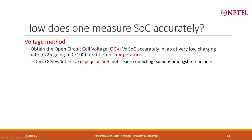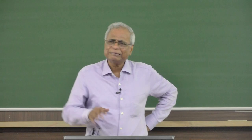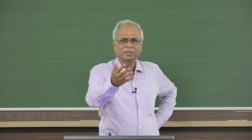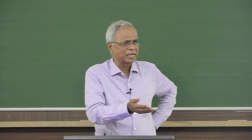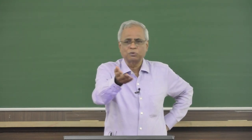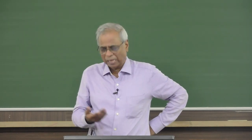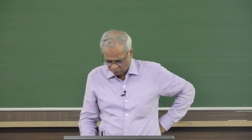The question I am asking is: what is the state of health? If it is a good battery, nearly 100 percent, you will get one OCV versus SOC curve. If the battery is getting deteriorated, will you get another? This is not clear from the literature. In fact, this should be an important exercise — you should convey to Sushant. He himself should do enough experiments, do this measurement, and get your data.